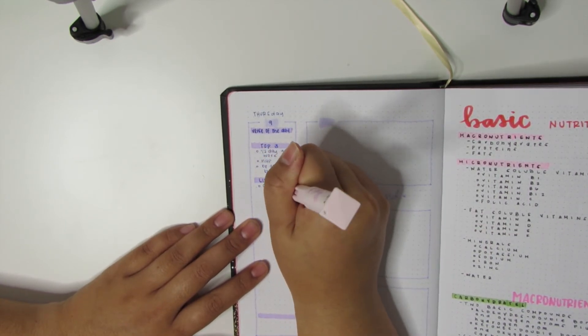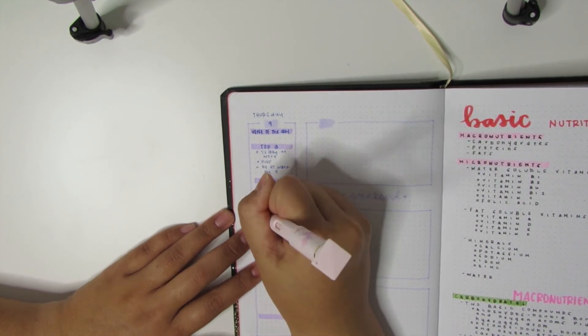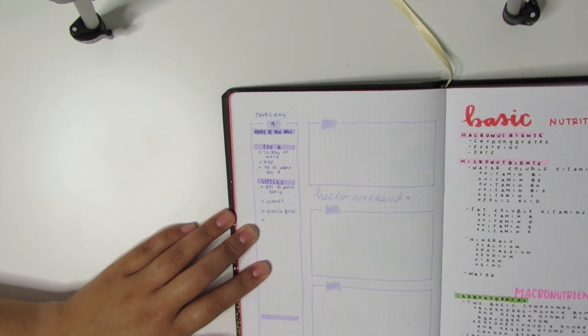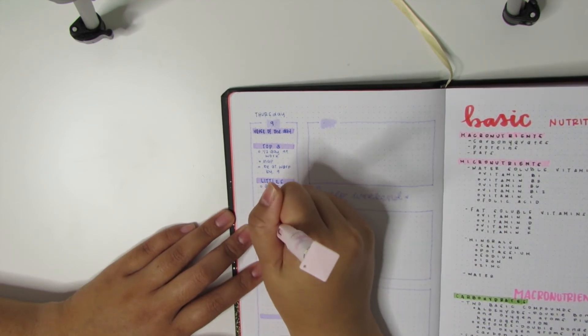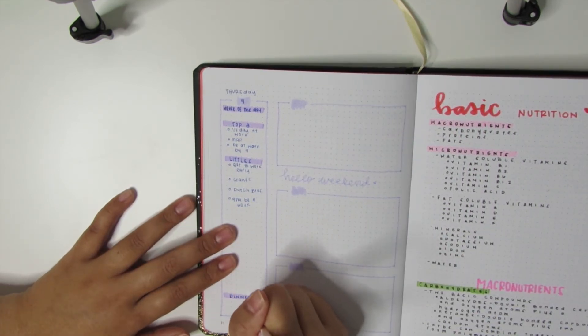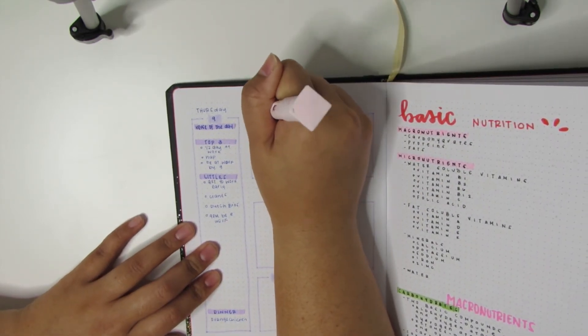But the nice thing about bullet journaling is really the fact that I can always change it up depending on my schedule and depending on what I'm needing that week. There will be weeks where I just do a horizontal layout and call it a day, but there's also going to be weeks where I do need it to be very structured just because if I have a ton of appointments like doctor's appointments or just meeting people or scheduling dinners and whatnot to catch up with friends.